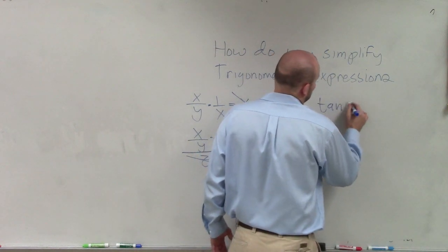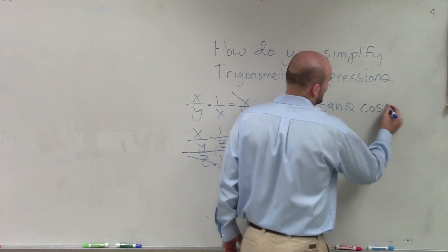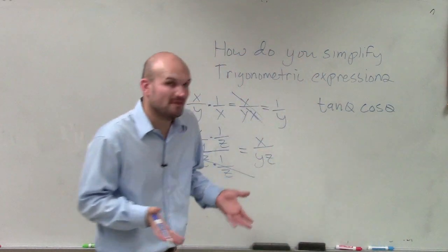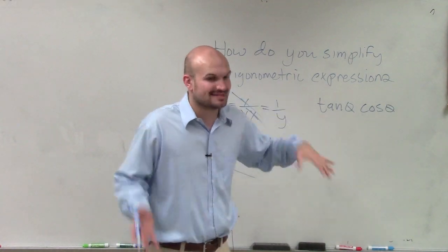So for instance, if I had like tangent of theta times cosine of theta. Well, if I wanted to simplify this, I can use my quotient identity to say, well, let's rewrite this.